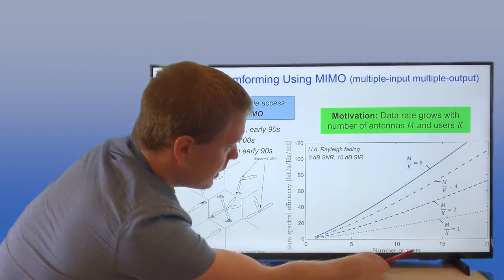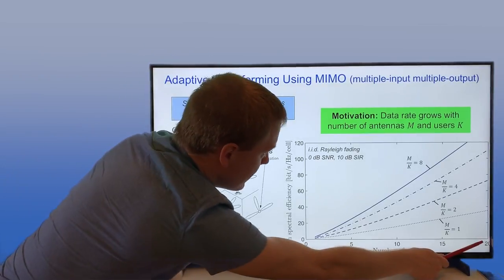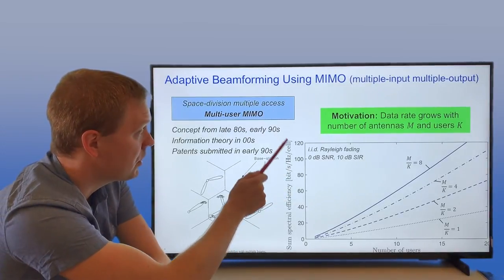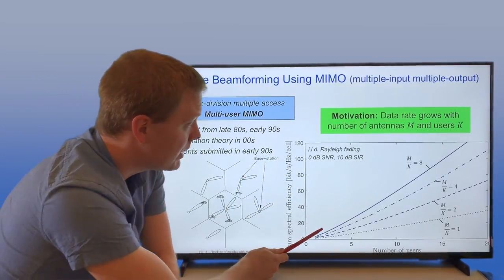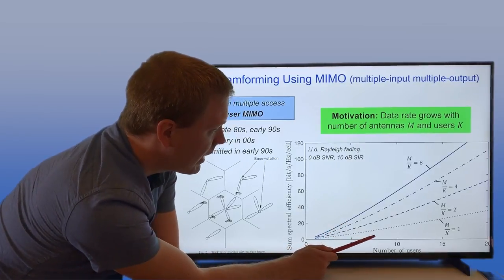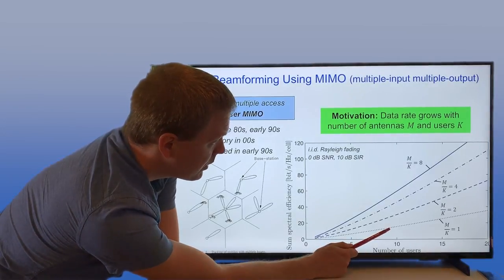Here I'm showing the number of users growing from zero up to 20. Here is the sum spectral efficiency measured in bits per second per hertz per cell. We can see different lines for different cases depending on how many antennas you have compared to the number of users. Here you have the same number of antennas and users.